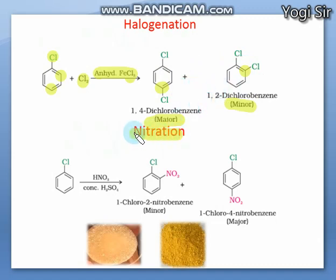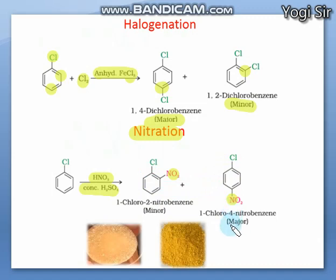In the nitration reaction, the nitrating mixture — concentrated HNO₃ plus concentrated H₂SO₄ — is used. This produces 1-chloro-2-nitrobenzene (ortho, minor product) and 1-chloro-4-nitrobenzene (para, major product). The para isomer is the major product. These are yellow-colored crystalline compounds.